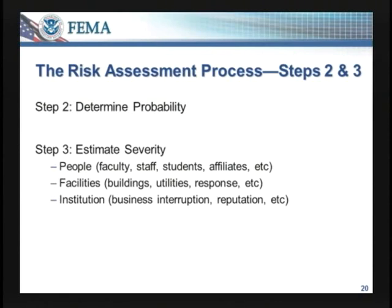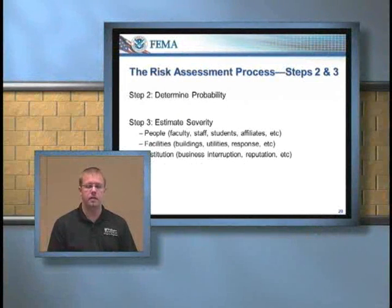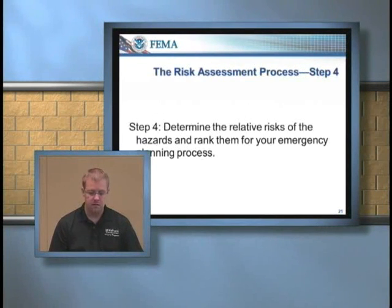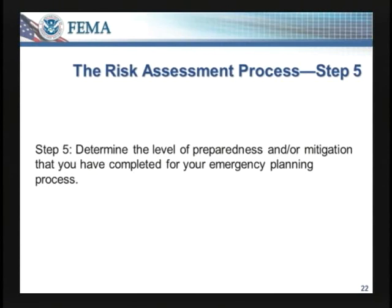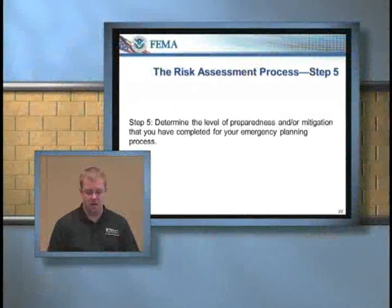Then we need to look at our institution. What is our level of business interruption? Will the hazard affect our reputation? As we saw from Hurricane Katrina, Tulane and others weren't widely prepared for that level of hurricane and actually had to shut down the university for over a year and send students to other universities. Step four: determine the relative risk of the hazards and rank them for your emergency planning process. Step five: determine the level of preparedness or mitigation you've completed. If you've written a plan, trained against the plan, or mitigated, you should get credit for that, and overall it should take your relative risk score down.